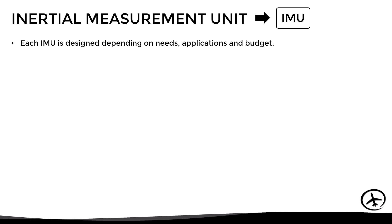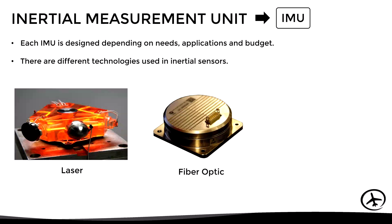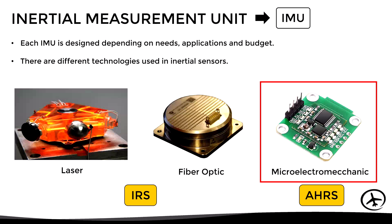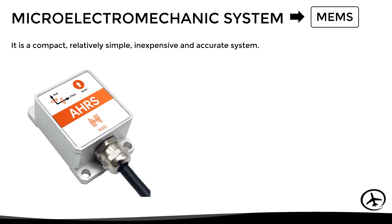It is important to mention that each IMU is different, since each unit is designed depending on needs, applications, and budget. Therefore, there are different technologies used in inertial sensors. For example, laser and fiber optic sensors are normally used in advanced inertial reference systems, while micro-electromechanical sensors are widely used in attitude and heading reference systems. In this video we will focus on this type of sensor — the Micro-Electromechanical System, abbreviated as MEMS, which is a compact, relatively simple, inexpensive, and accurate system.